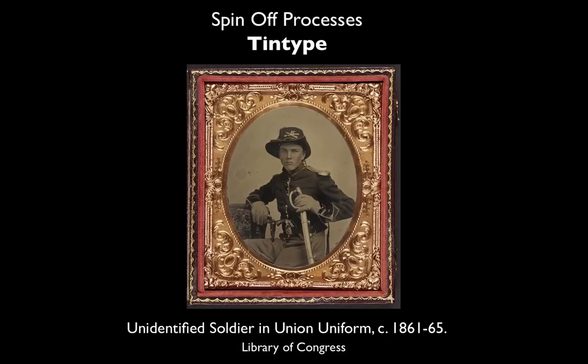Tintypes were another spin-off process that also utilized collodion. Rather than applying collodion to a sheet of glass as with the ambrotype process, tintypes were created by coating a metallic sheet with collodion, placing it in a camera, and exposing it while still damp. The resulting images were durable, unlike ambrotypes, and the process was simple and used accessible, low-cost materials, resulting in an affordable option that made portraiture a reality even to the working class.